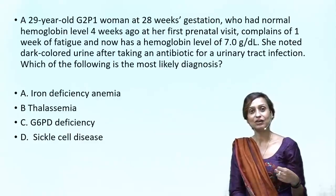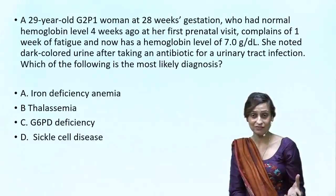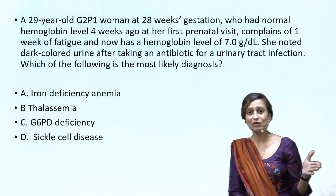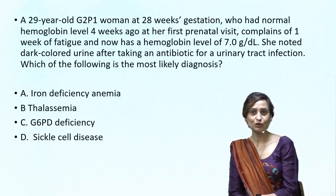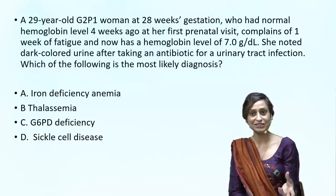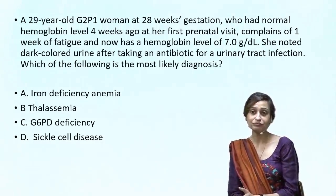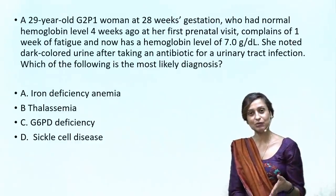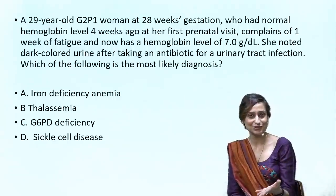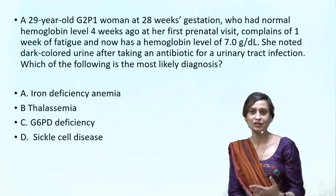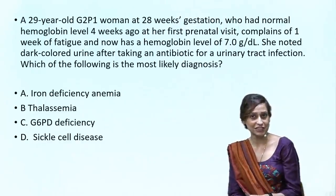Iron deficiency anemia builds up gradually. It can start early in pregnancy because hemodilution begins as early as 6 to 10 weeks, with a gradual decline of hemoglobin levels. The peak decline would be seen around 24 to 28 weeks. But here we don't see a gradual decline, and had it been IDA she would have been symptomatic even prior to 28 weeks. That's why we rule out iron deficiency anemia.